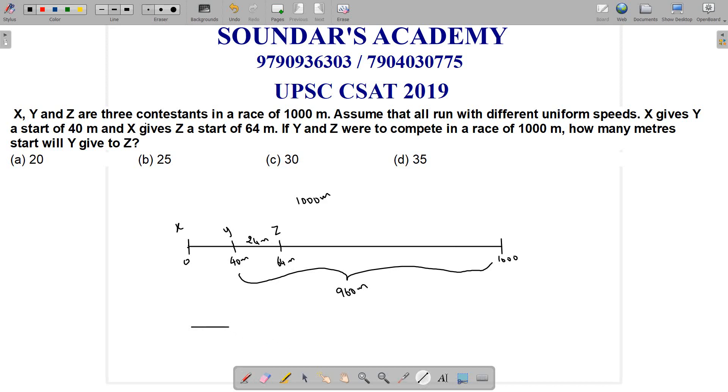For Y and Z, in 960 meters Y gives 24 meters to Z. So for 1000 meters, we set up the proportion: 960 meters is to 24 meters as 1000 meters is to X.